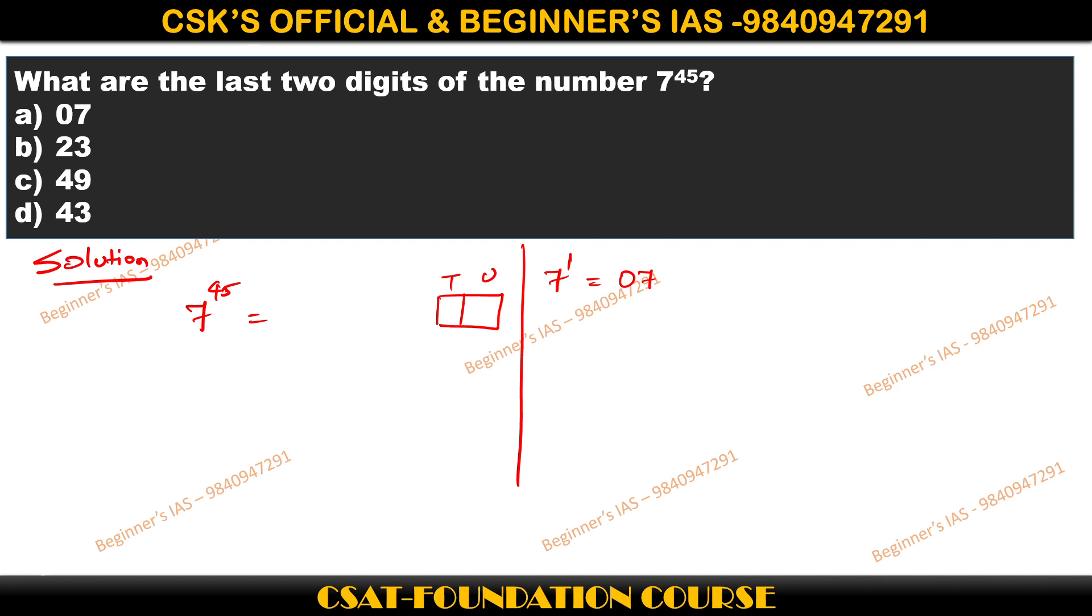Then 7 square is 49, 7 cube is 343, then 7 power 4 is 2401, then 7 power 5 is 16807, 7 power 6 is 117649.